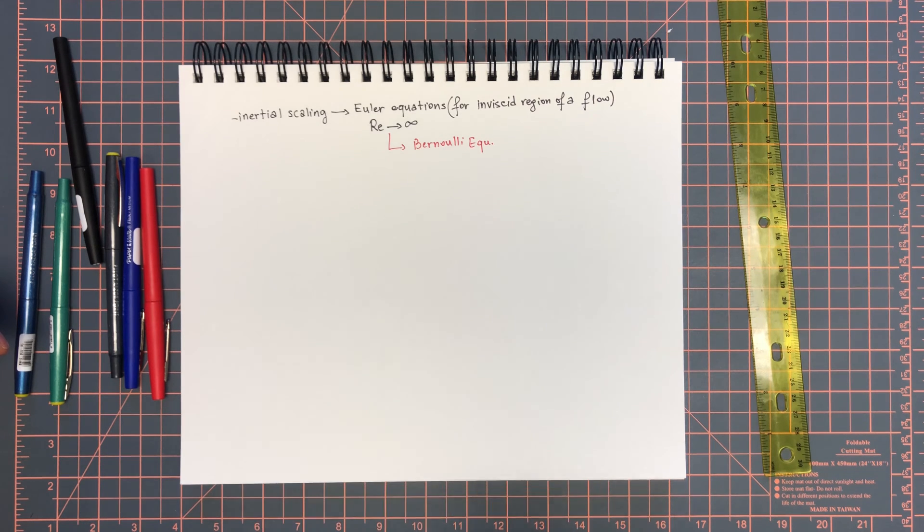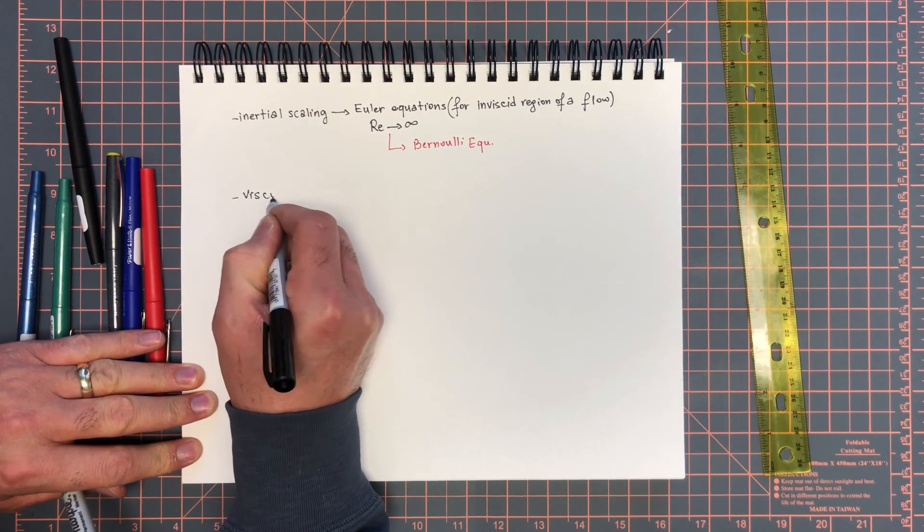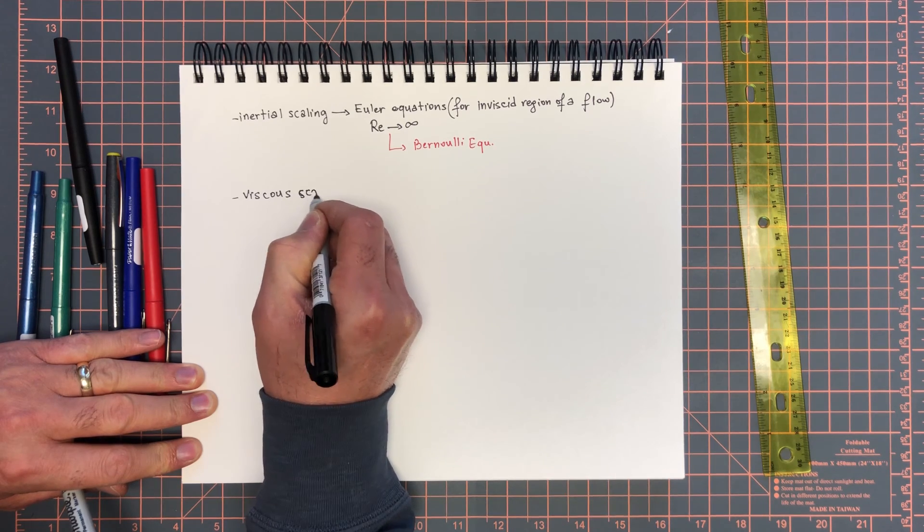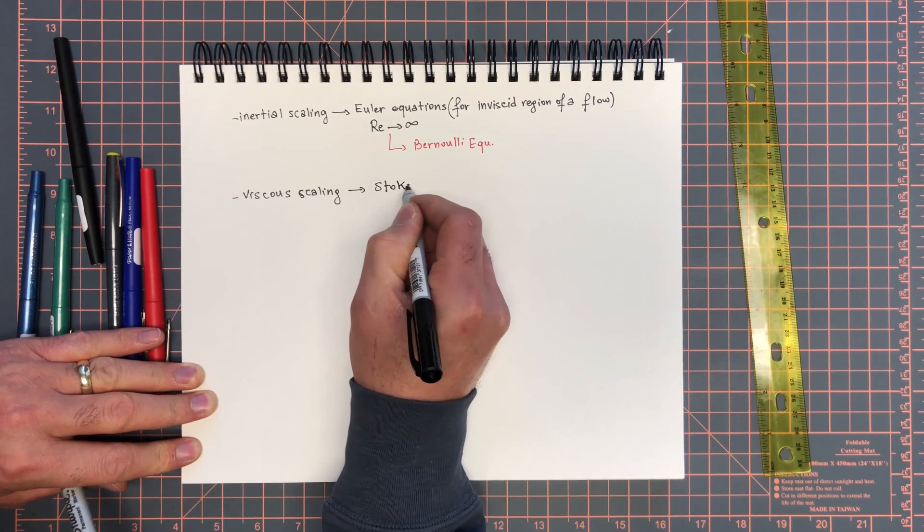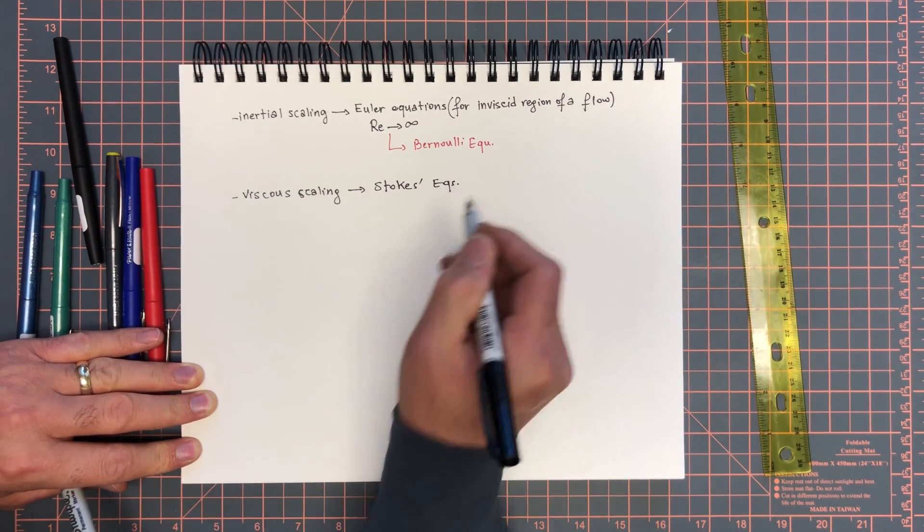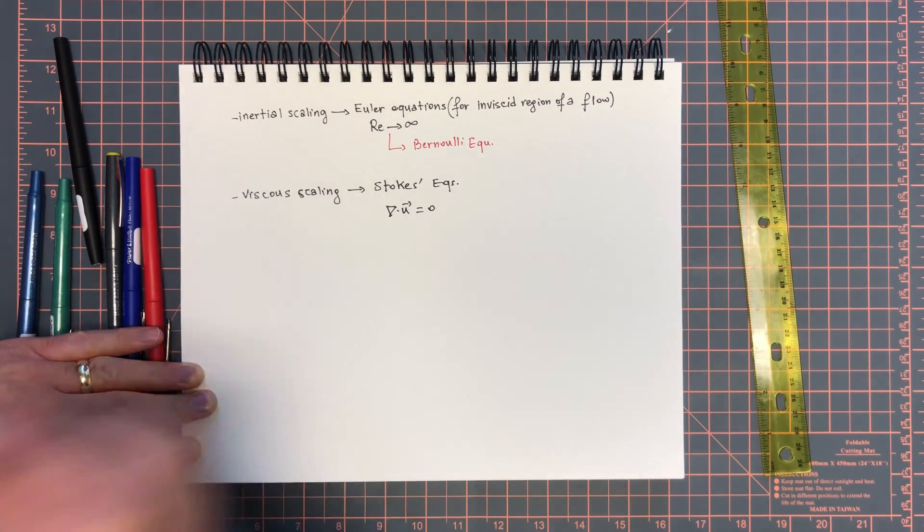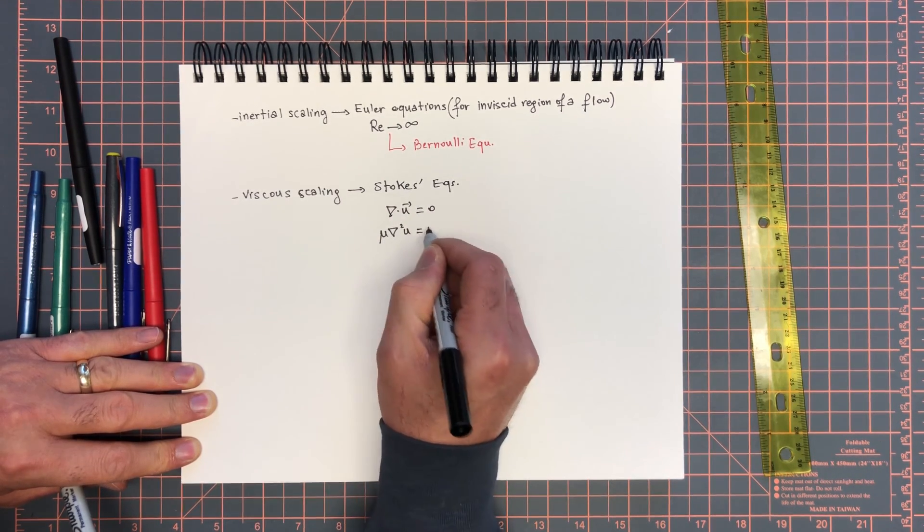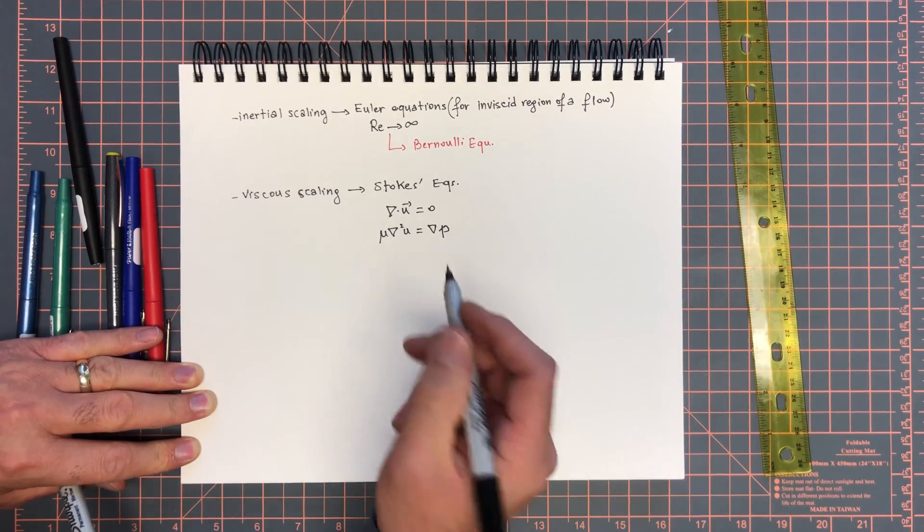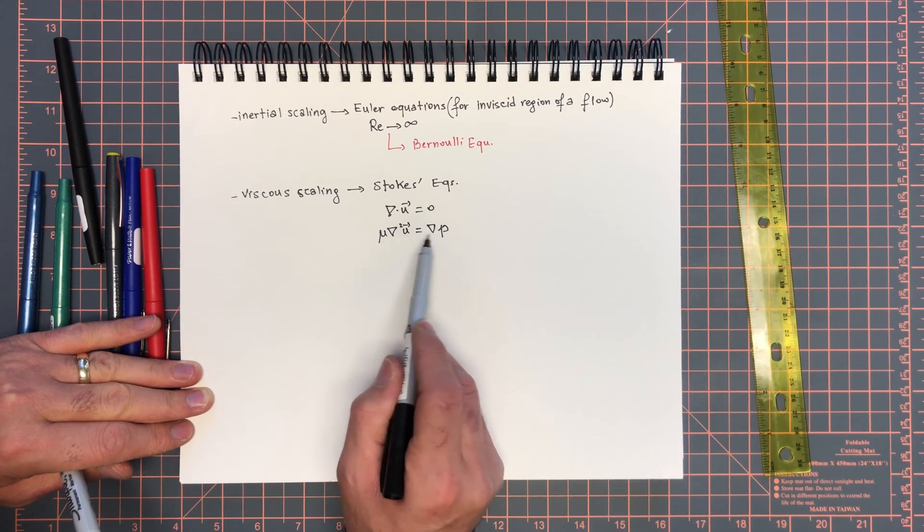Now we're looking at the viscous scaling, and that gave us the Stokes equations. Those were div u equals zero and del squared u equals grad P in dimensional form. These equations are linear and we can use superposition.